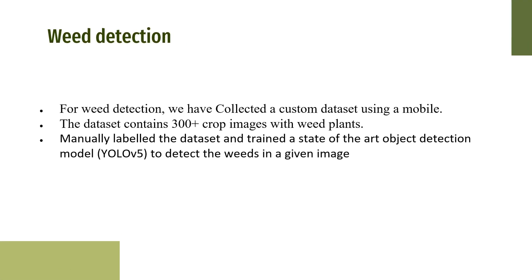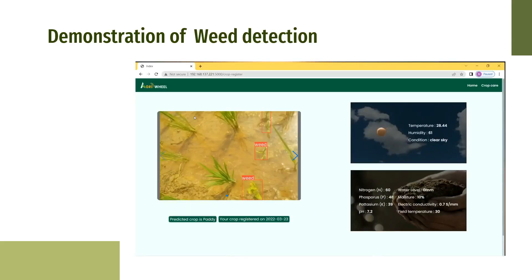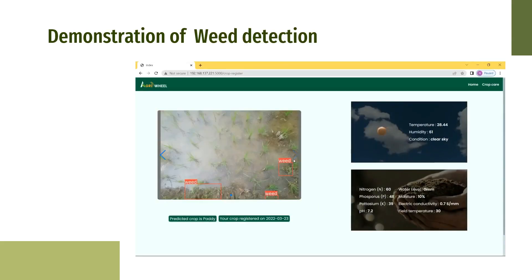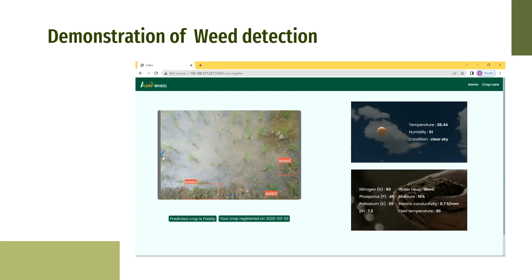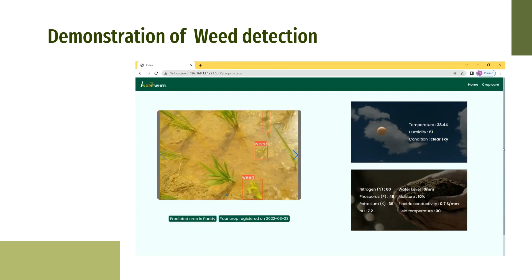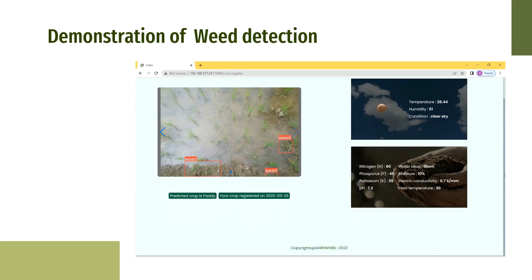Weed Detection: Another major problem we observed is weed, which reduces actual yield by 40 to 60%. Weed should be identified in time and removed. To address this problem, we included weed detection in our design. For weed detection, we prepared our own custom dataset from our villages, which contains around 300+ images to train our model. Using the YOLO v5 algorithm, we achieved good accuracy in identifying the weeds.